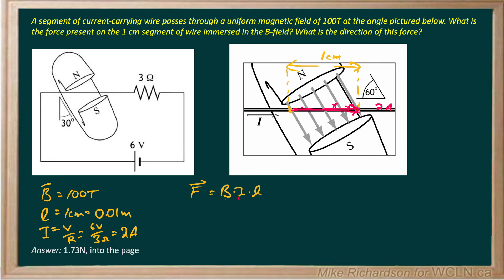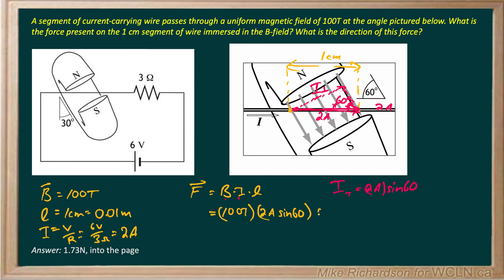The pink line represents the hypotenuse — that's the overall current of 2 amps. We want the component that's perpendicular, called I perpendicular. If the angle is 60 degrees, then I perpendicular equals 2 amps times sine 60. So we replace I with 2 sine 60. The magnetic field is 100 Teslas, I perpendicular is 2 sine 60, and the length of wire is 0.01 meters.